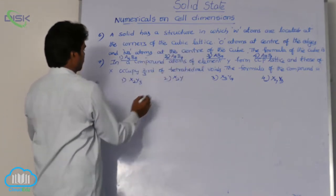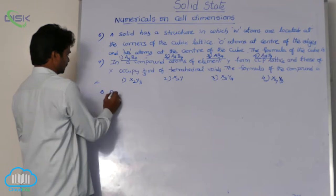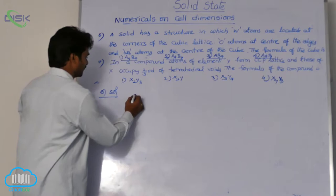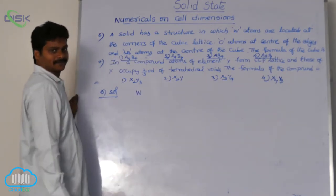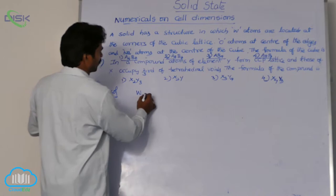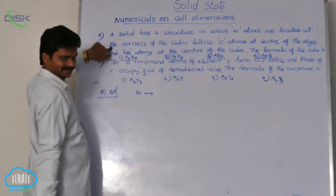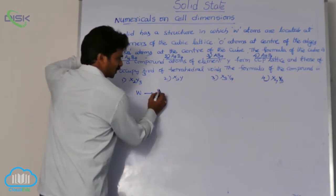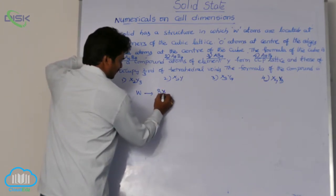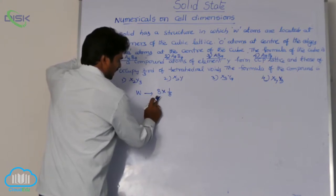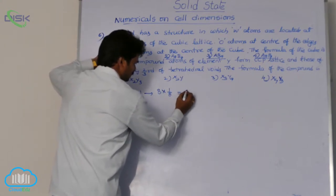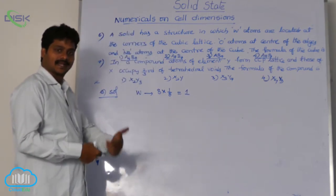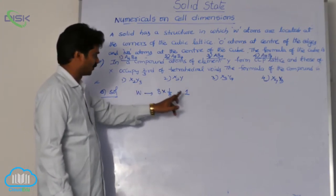Here, W atoms are located at the corners of the cubic lattice. At the corners means how many atoms? Total 8 lattice points. But each atom contributes only 1 by 8. That means 8 times 1 by 8, how many? So one atom only. Per unit cell, number of atoms of element W contributed per unit cell only 1.